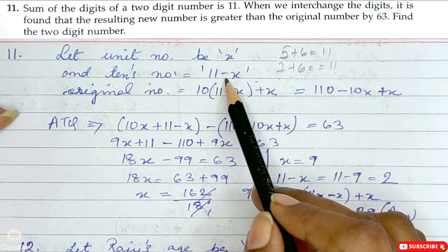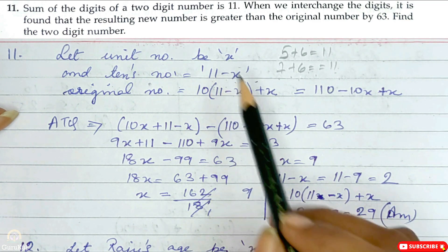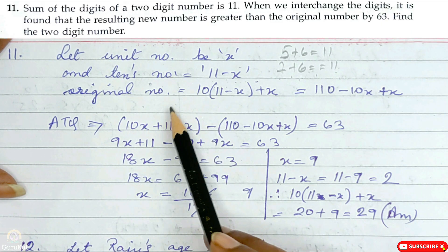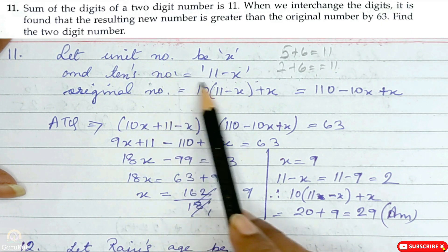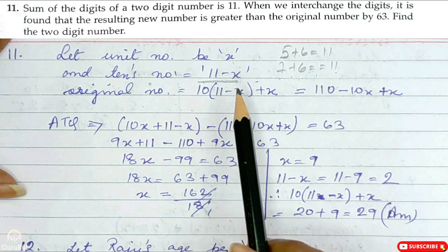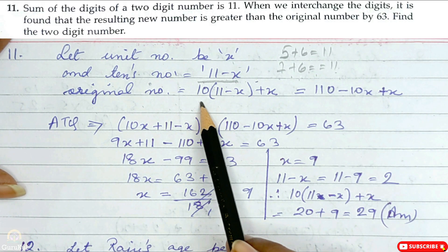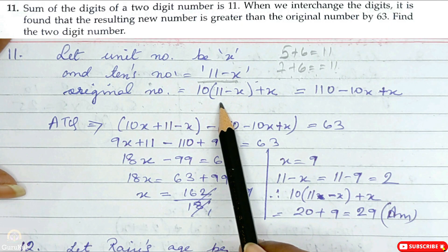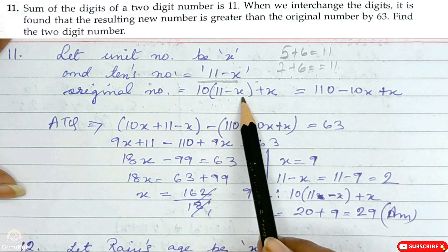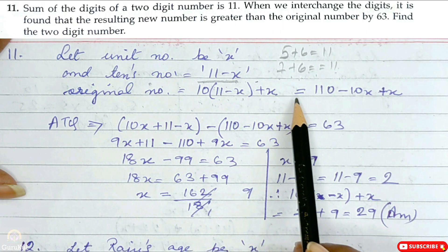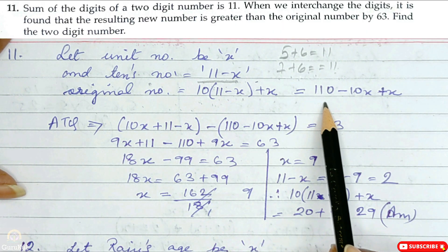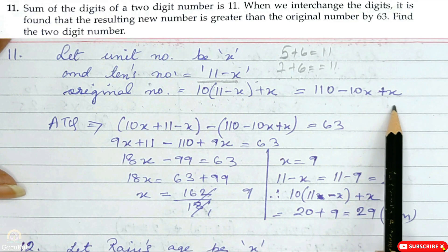So 11 minus x will be the second number. The original number in expanded form is 10(11 minus x) plus x, which equals 110 minus 10x plus x, which is 110 minus 9x.